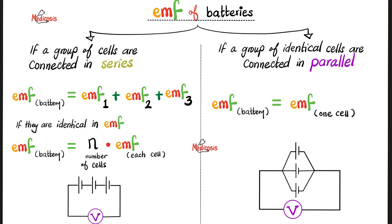So in this case, it will be 3, because I have 3 cells, multiplied by the voltage of each, which is 1.5. 3 multiplied by 1.5 will give you the same result, which is 4.5 volts.